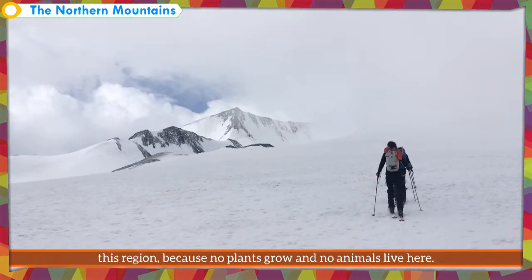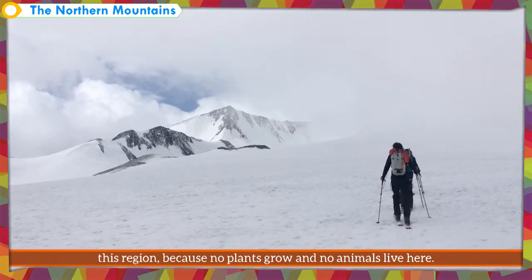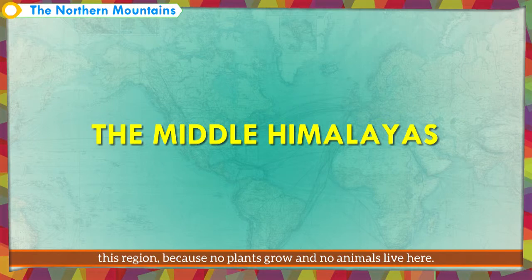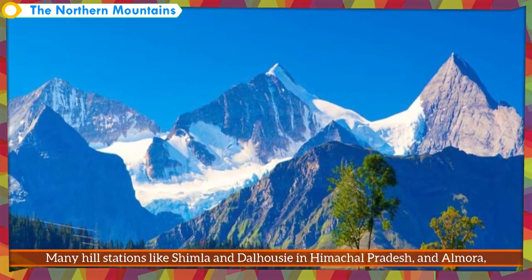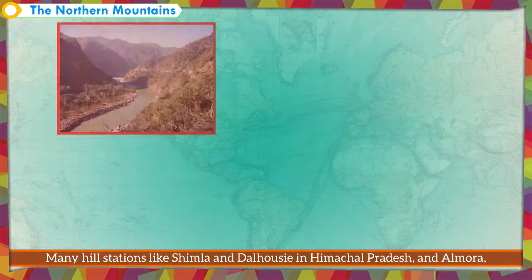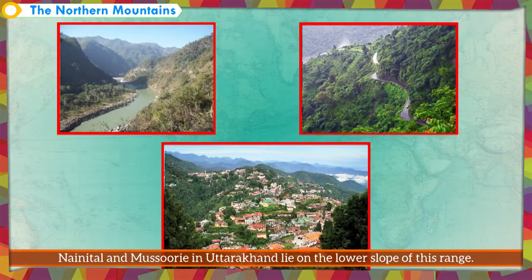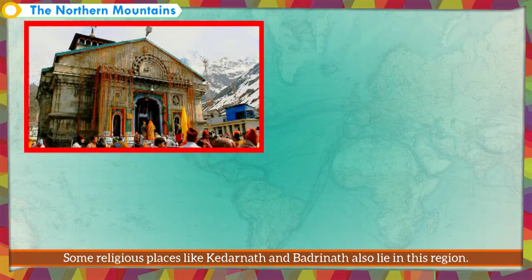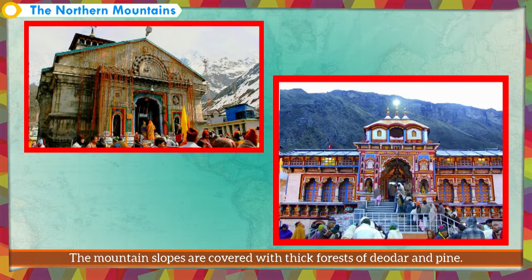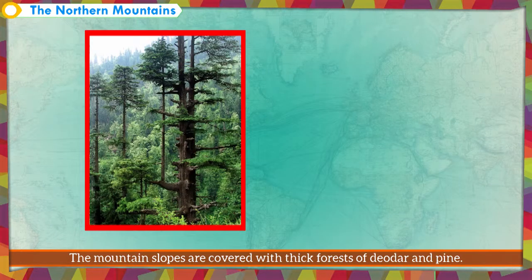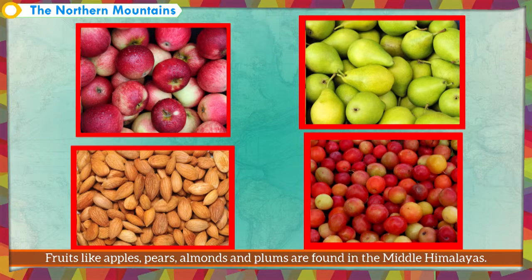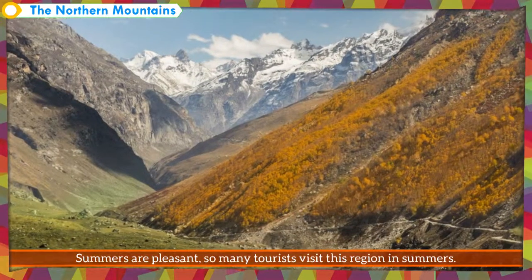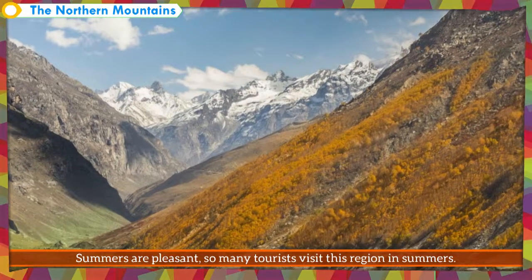Life is not possible in the Great Himalayas because no plants grow and no animals live there. The Middle Himalayas, also known as Himachal, has many hill stations like Shimla and Dalhousie in Himachal Pradesh, and Almora, Nainital and Mussoorie in Uttarakhand on its lower slopes. Some religious places like Kedarnath and Badrinath also lie in this region. The mountain slopes are covered with thick forests of deodar and pine. Fruits like apples, pears, almonds and plums are found here, and summers are pleasant, attracting many tourists.